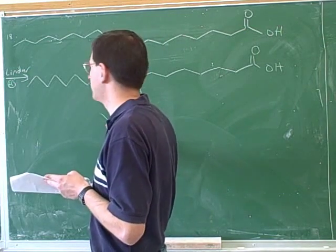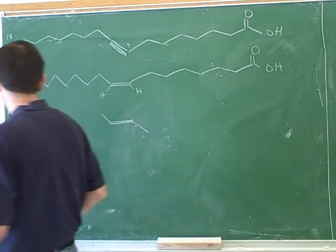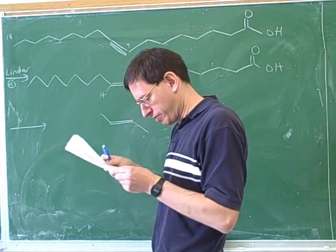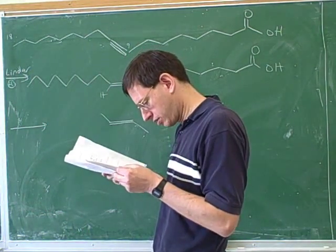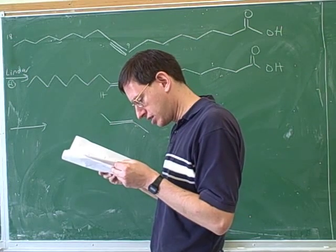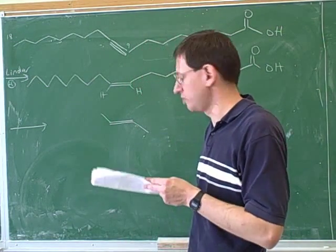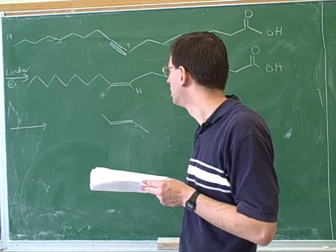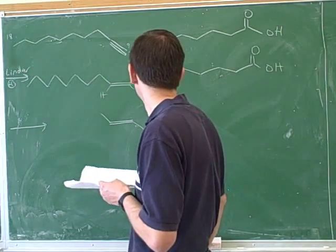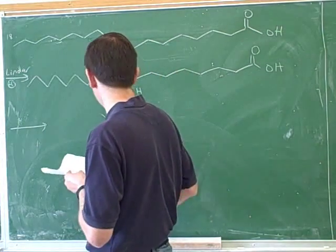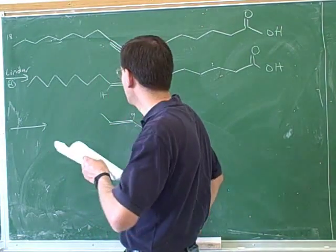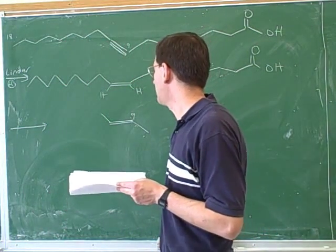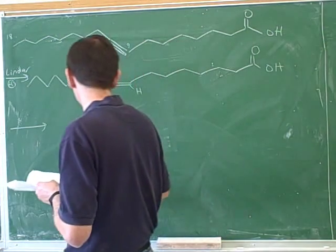So while we're at it, suppose that you were trying to turn it into a trans double bond. I don't think they gave you the way to do that here, but they did. Which of these would give us the trans double bond? On the nickel?